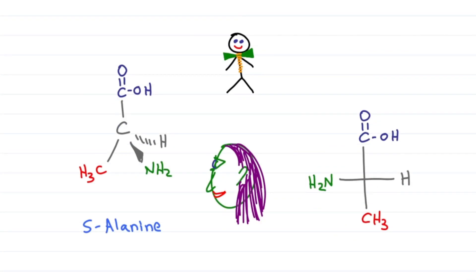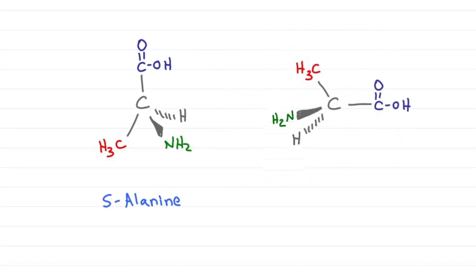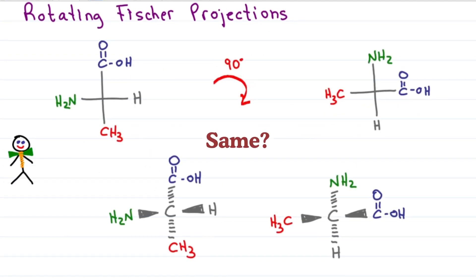What if I want my nitrogen at the top? Can I just rotate it 90 degrees? We know it works for the 3D version because I have S-alanine on the left and again S-alanine on the right. What about the Fischer? Are they also the same? Mr. Organic Chemistry tells me that I have these two structures. Are they the same?